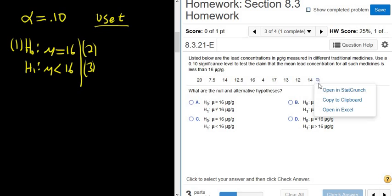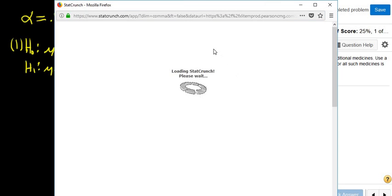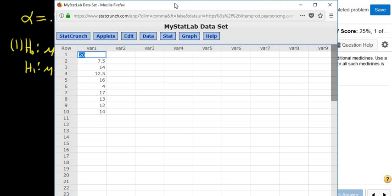If you click this little box and click open in StatCrunch, it should type in all of the data into StatCrunch for us. Let's try it. Yes. It looks good. It worked.